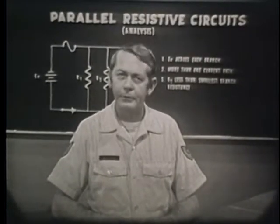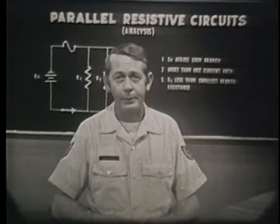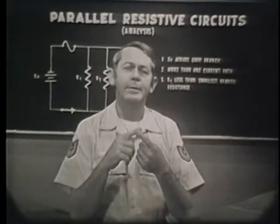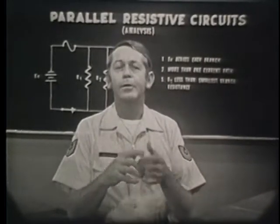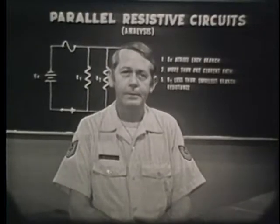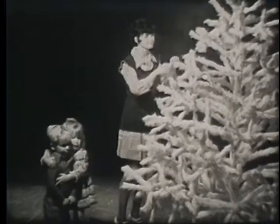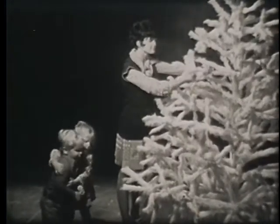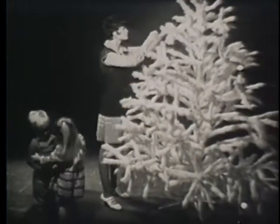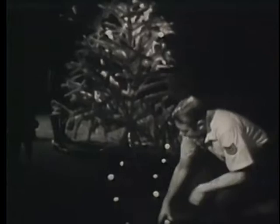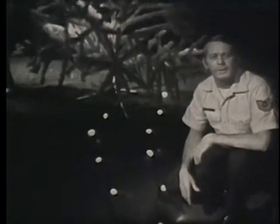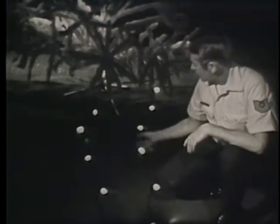Electricity does many useful jobs, as you've just seen from a few examples. The type of job it does is determined by the type of circuit we use to control it. Here are two strings of Christmas lights. At first glance there appears to be little difference, but watch what happens when I remove one bulb from each string.